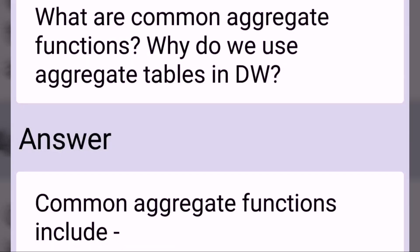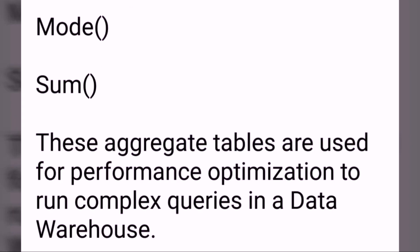What are common aggregate functions and why do we use aggregate tables in data warehousing? Common aggregate functions include Average, Count, Maximum, Median, Minimum, Mode, and Sum functions. These aggregate tables are used for performance optimization to run complex queries in a data warehouse.